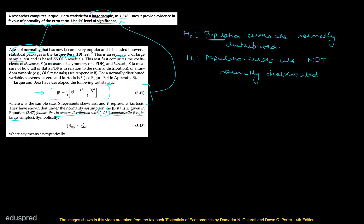We are already given the calculated value, so let's talk about the critical value. For the critical value, we have to find the value of chi-square at two degrees of freedom. To visualize this, take a look at this chi-square distribution I'm drawing here. This is a general shape — not specific to any particular degrees of freedom. We are testing at a 5% level of significance, so we need the value of chi-square to the right of which there is 5% area, meaning the probability is 0.05.